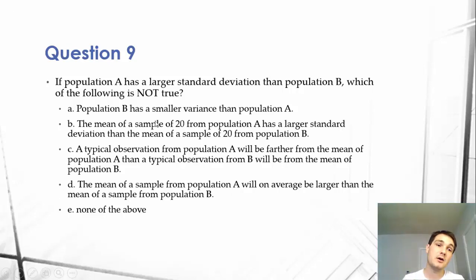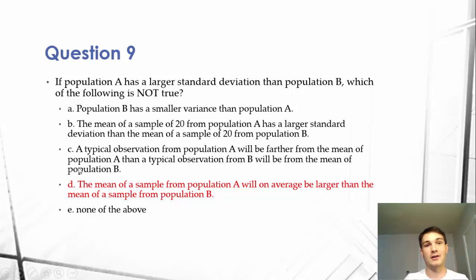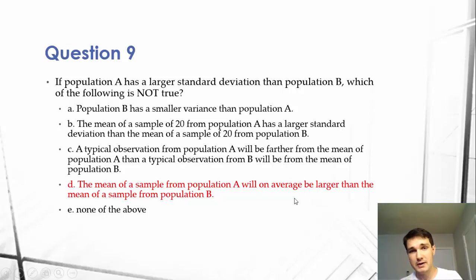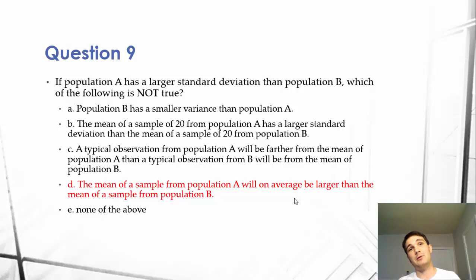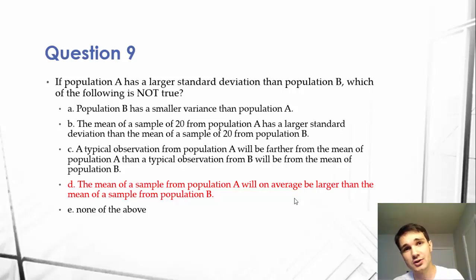It's important to remember that you can have two different sets of data both with the same mean but extremely different standard deviations, and the deviations will not affect the mean. D is the answer because it's the definition of a mean, not standard deviation. Today we covered in depth the concept of standard deviation. If you enjoyed this video, please subscribe to Business Core Tutoring. Feel free to write in the comments or on my Twitter if you have questions, and have a wonderful day!